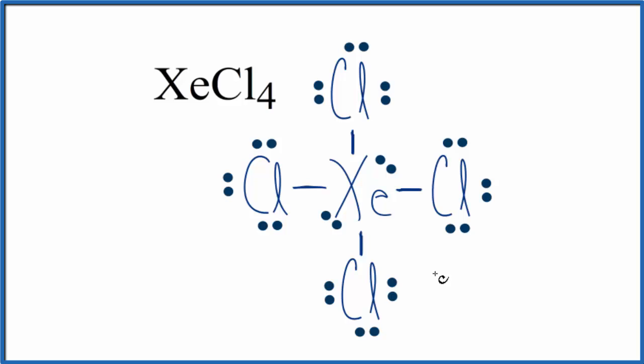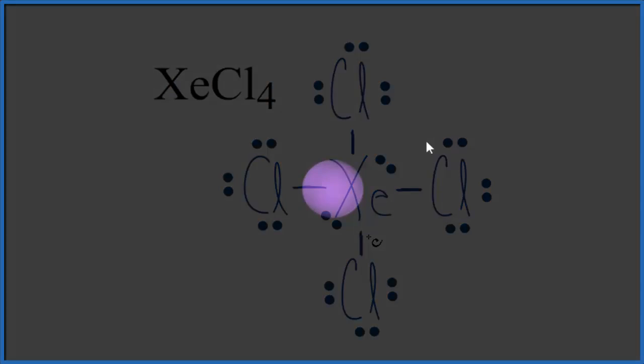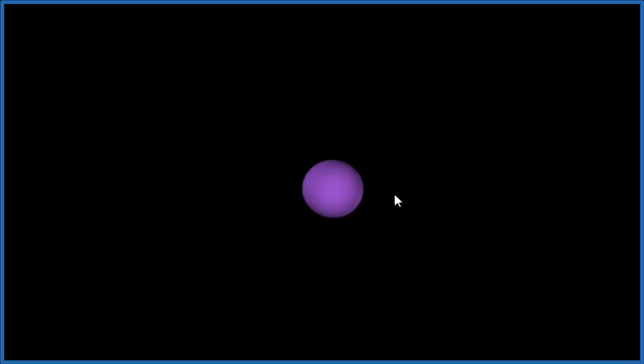But, what about the molecule overall? We really need to look at the molecular geometry to understand that. So, the purple, that'll be our central xenon atom. Let's add four chlorine atoms.